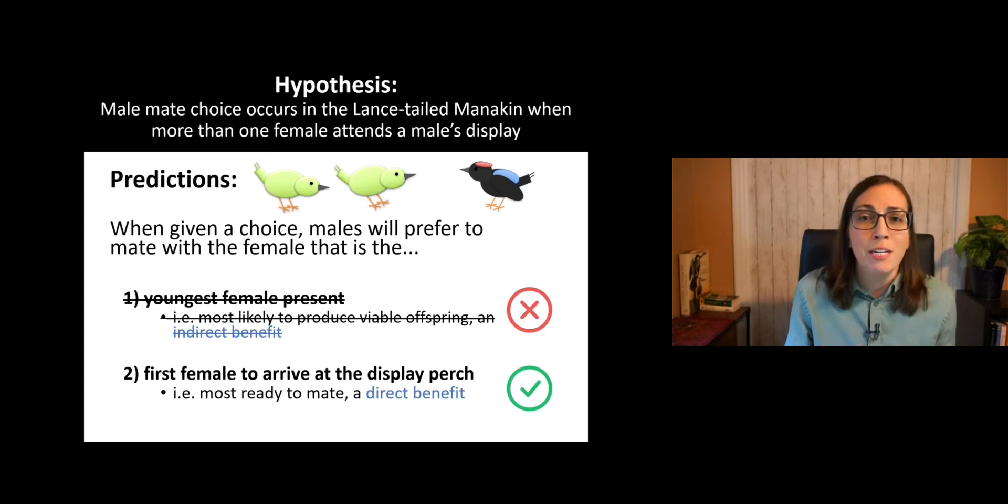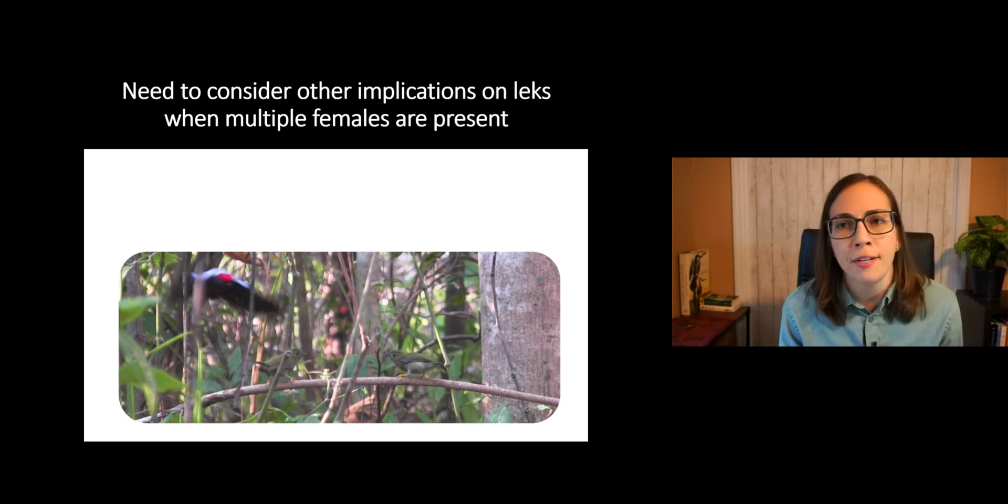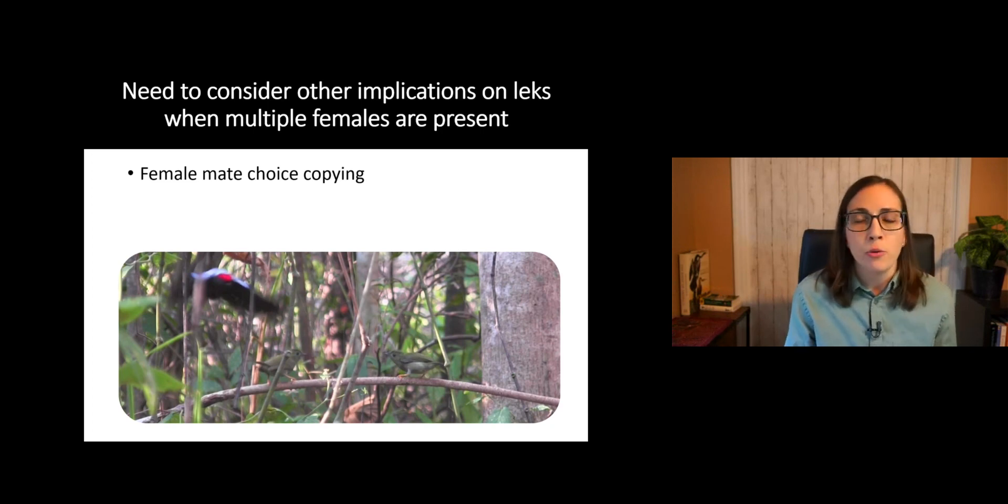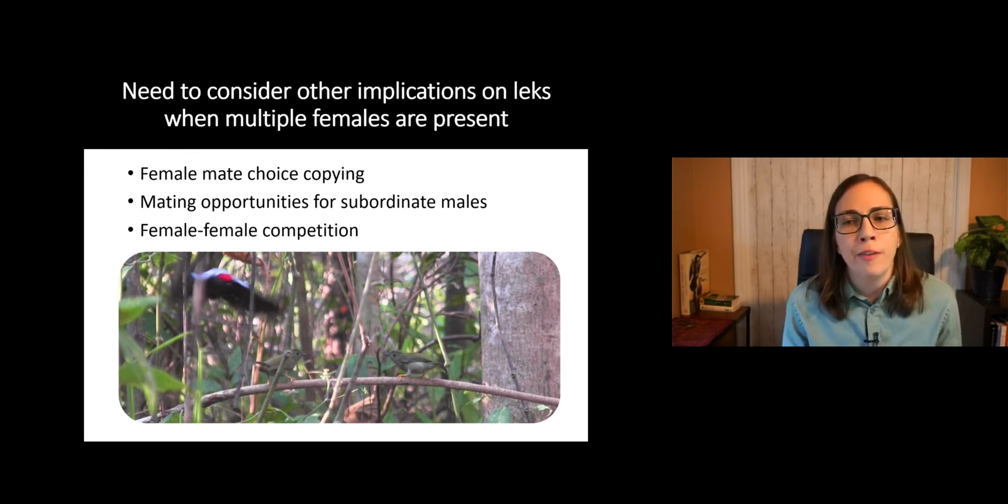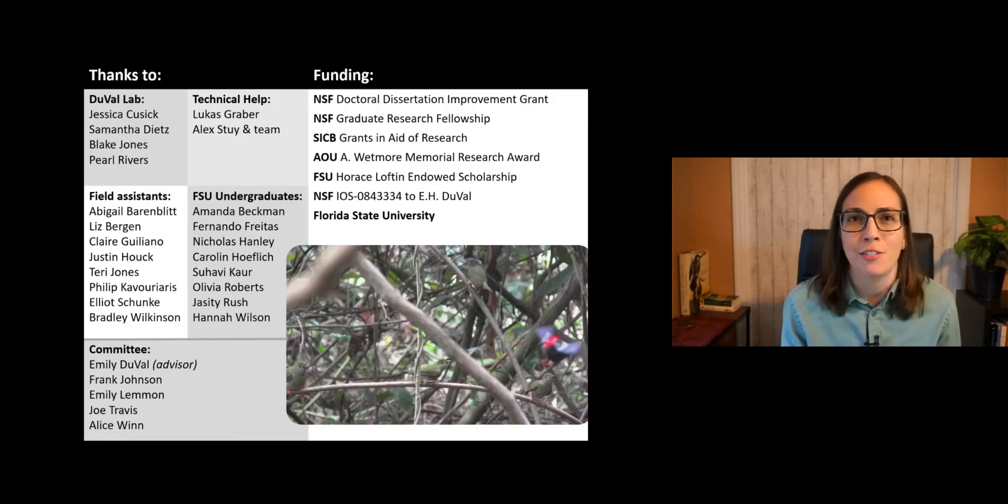So our results did match our original prediction in terms of direct benefits. And so our next step in this project will be to confirm with nest data whether the female first on the display perch is actually the closest to laying eggs in her nest. Now there are a number of other factors that could be considered on leks when multiple females are present for a male's display. There is the potential for female mate choice copying and subsequent visits to the male. These multi-female displays may actually provide mating opportunities for subordinate males, which if that sounds like an interesting topic to you, you should definitely check out Emily Duvall's talk from yesterday. There's also the possibility of female-female competition for potentially limited sperm. So thanks for watching my talk and I'd be happy to answer any questions.